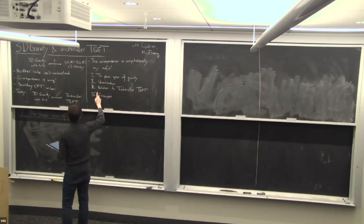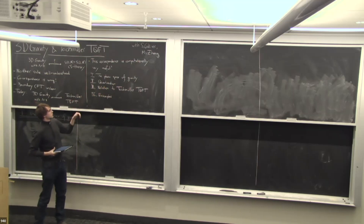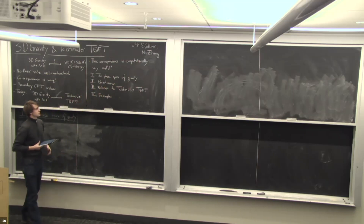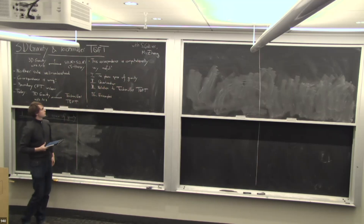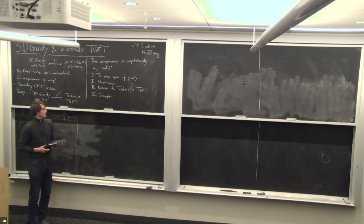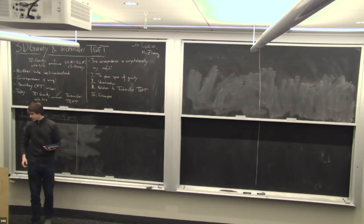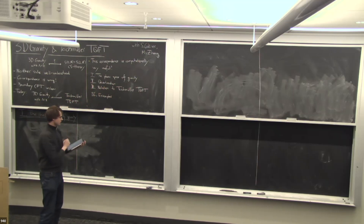I'll start with a review of known things: first discussing the phase space of 3D gravity, then quantizing it, seeing how it's related to the Teichmüller TQFT, and finally going through a number of examples of what we actually compute. Since I want this to be relatively informal, feel free to interrupt at any time.